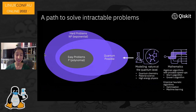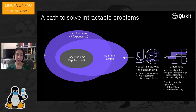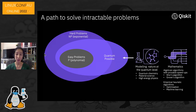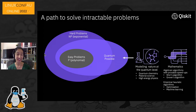Quantum computers promise to solve a variety of hard problems that classical computers can't. There are many problems that classical computers simply cannot solve because they are too computationally difficult. These problems often have an exponential character such that the time or size of classical computer required increases exponentially with the size of the problem, making it impossible for classical computers to solve at any practical scale. Future quantum computers are expected to solve some of these problems, and since quantum computing is nascent, we simply don't know the full range of possible problems a quantum computer can solve.